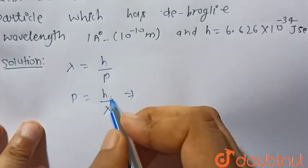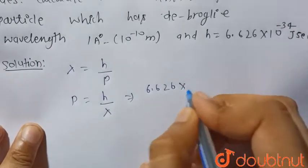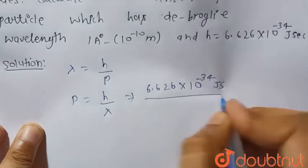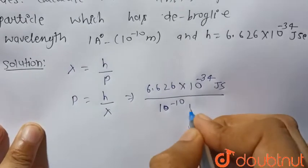Both are given in the question: 6.626 into 10 to the power minus 34 joule second, and lambda is given as 10 to the power minus 10 meter.